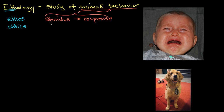The stimulus could be another animal doing something, it could be the temperature, it could be the availability of food, it might be the sun setting — but it's some type of response due to that stimulus. The second thing is, how did this behavior come about? Was it learned? Was it innate?